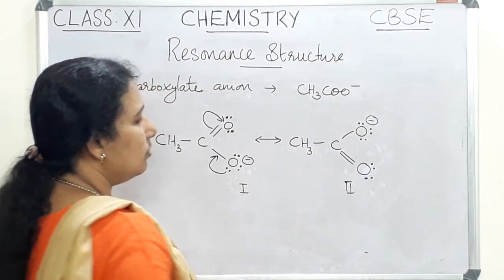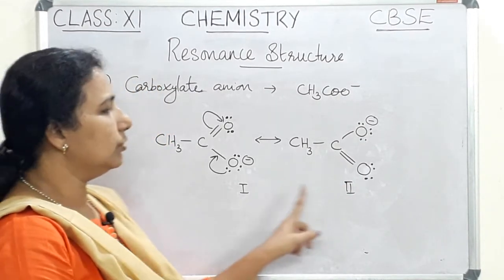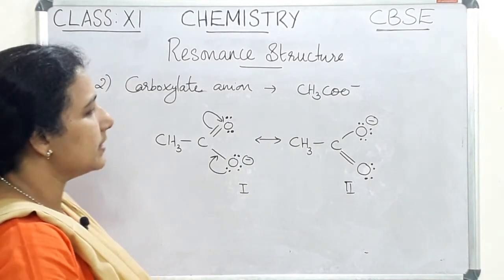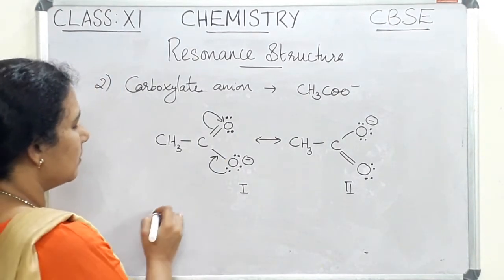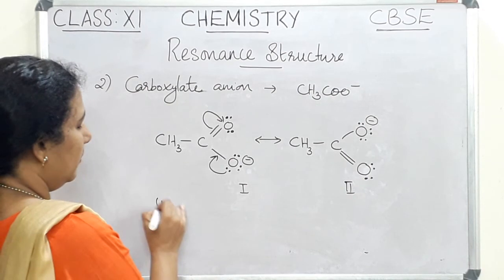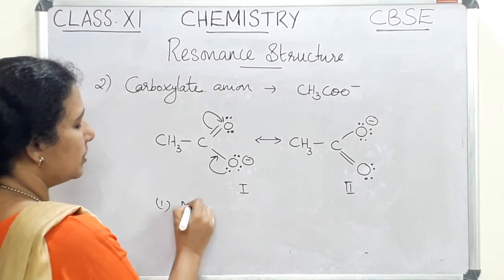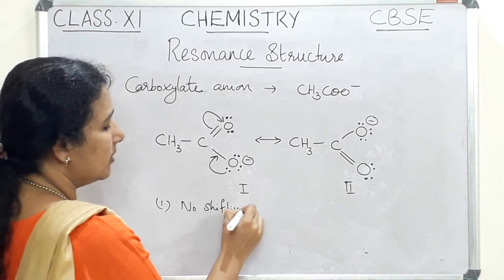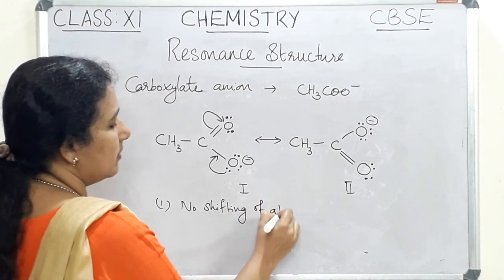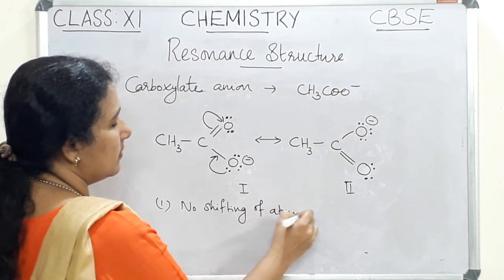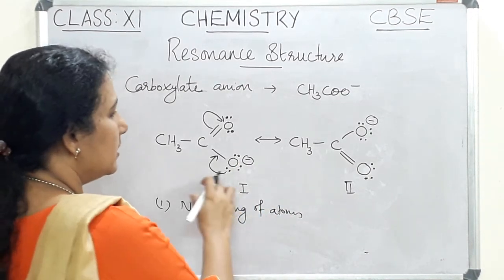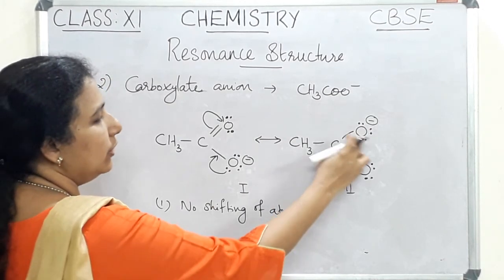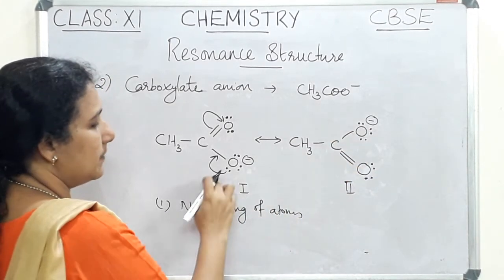There are two contributing structures, or two resonant structures, for the carboxylate anion. In these two contributing structures, we have not shifted any of the positions of the atoms — no shifting of atoms.